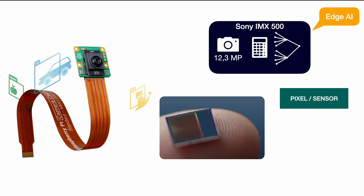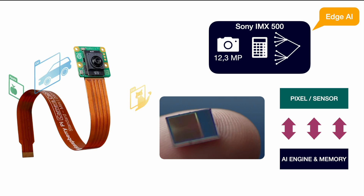Traditionally, you have a sensor taking the picture, and if you want to do any AI with the normal Raspberry Pi camera module 3, you need the AI engine and memory down at your Raspberry Pi. From a latency point of view, there's a lot happening in between. This communication between the sensor and your AI engine needs to take place via some cable or connection, requiring interfaces at both ends. And the Raspberry Pi is a microcomputer running an operating system, so allocating resources to this specific task is not the fastest way when it comes to latency.